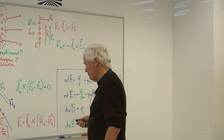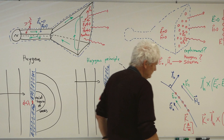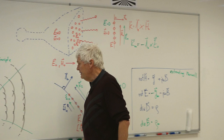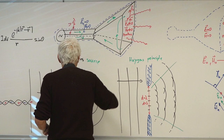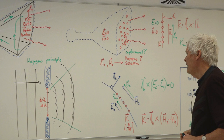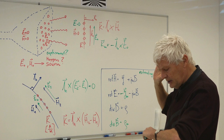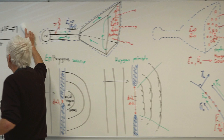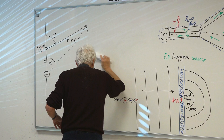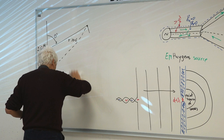Using Huygens' Principle in electromagnetics, the first thing is to find what an electromagnetic Huygens source looks like. I need to set up a coordinate system for this surface and identify the quantities that play a role. We'll use this in the next hour — I'm erasing the board now to make space for the new calculation.